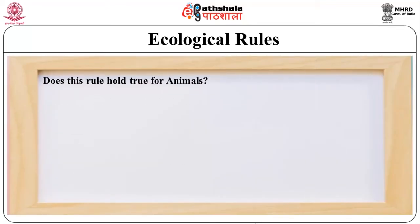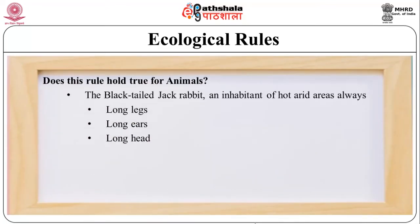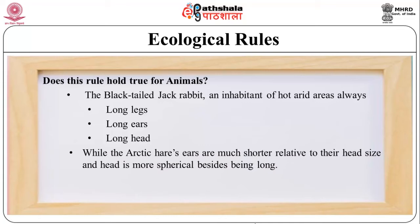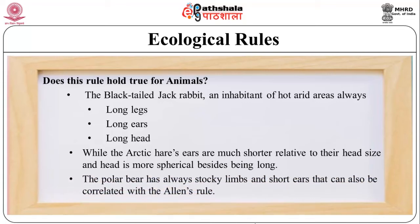For animals, the black-tailed jackrabbit, an inhabitant of hot arid areas, always has longer legs, long ears, and a long head, while Arctic hares are much shorter relative to their head size and the head is more spherical. The polar bear has stocky limbs and short ears, which can also be correlated with Allen's Rule. The figure shows the Arctic rabbit and black-tailed jackrabbit for comparison.